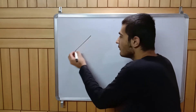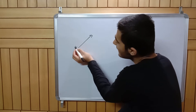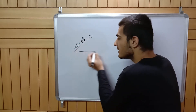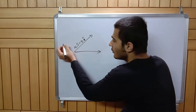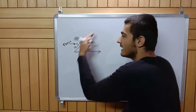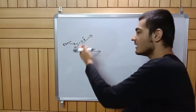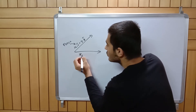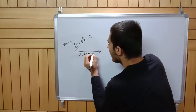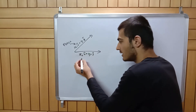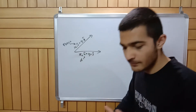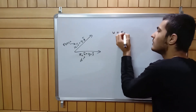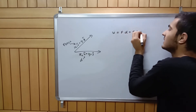In the previous videos, we've seen that if we have a force vector — x1 i-cap plus y1 j-cap — and you apply a force in that direction, you get a displacement in another direction given by x2 i-cap plus y2 j-cap. So this is your displacement. Work is given by the dot product of force and displacement, which is simply F times d times cos theta.